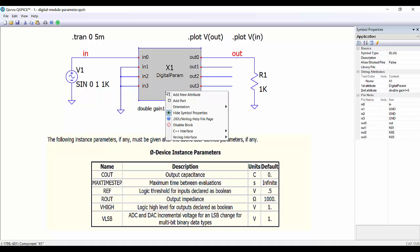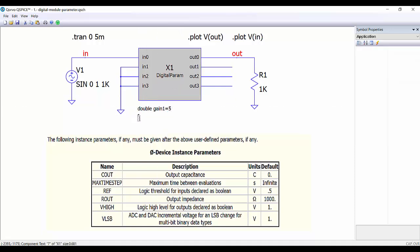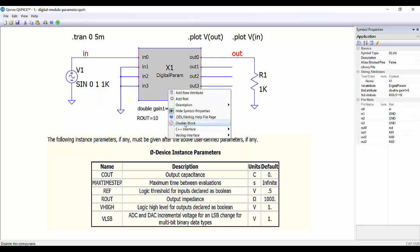Now we can add the internal parameters of the module, so we add here rout equal to 10. So we have here the value of the output resistance, and now we create again the C++ template.